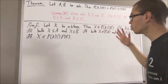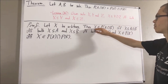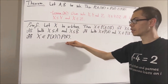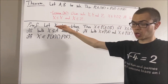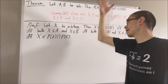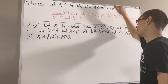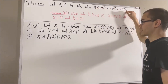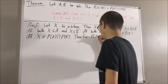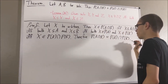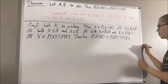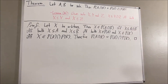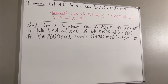So through a chain of if and only ifs, we've shown that X is an element of this set if and only if X is an element of this set. Since X is arbitrary, this means we have shown for all X, X is an element of this set if and only if X is an element of this set. And that proves that these two sets are equal, which is exactly what we wanted to prove. So this completes the proof. And that's pretty much it for this video.